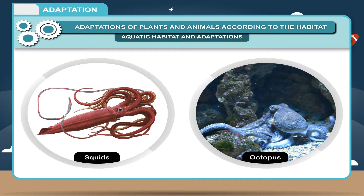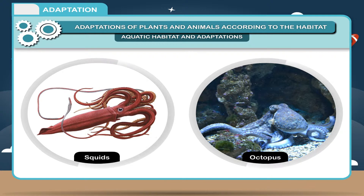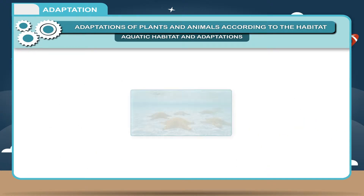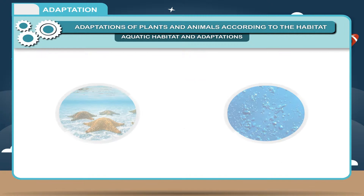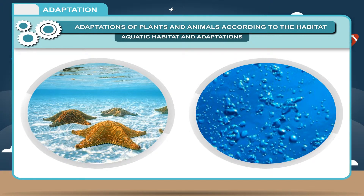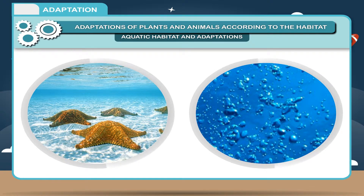There are some sea animals like squids and octopus which do not have streamlined shape. They stay deep in the ocean near the seabed and catch any prey that moves towards them. These animals have gills to help them use oxygen dissolved in water.